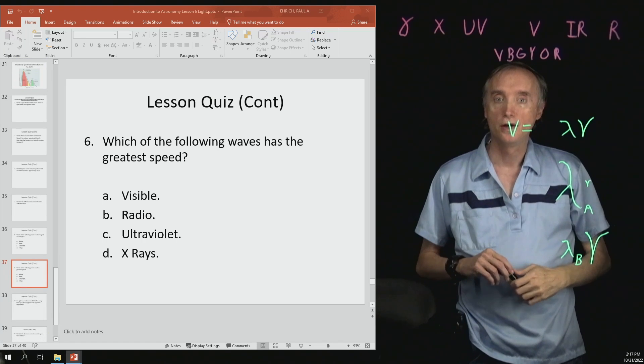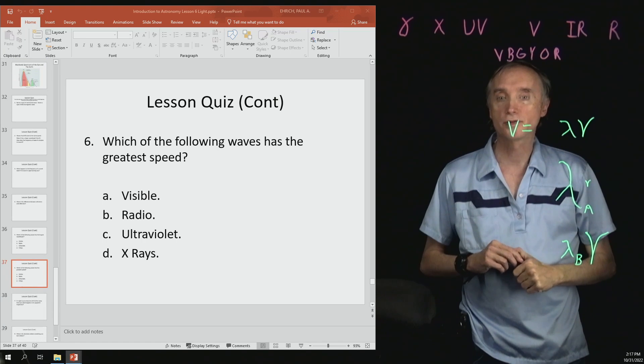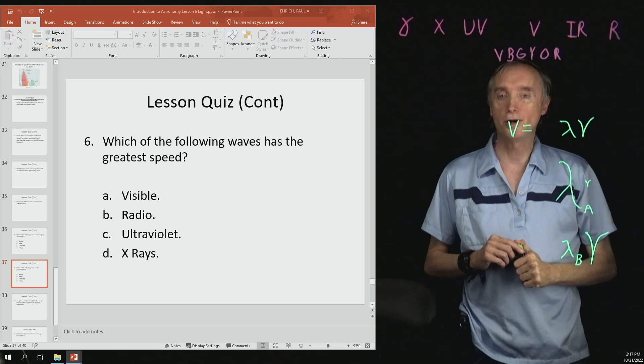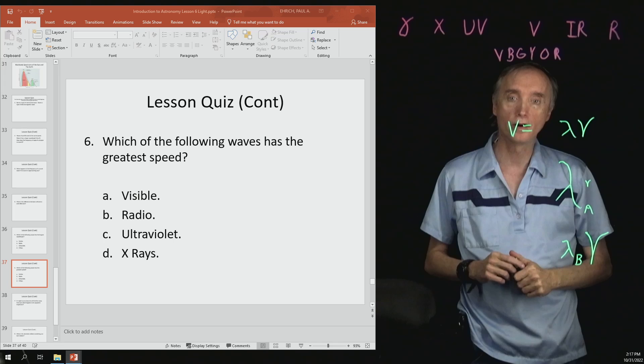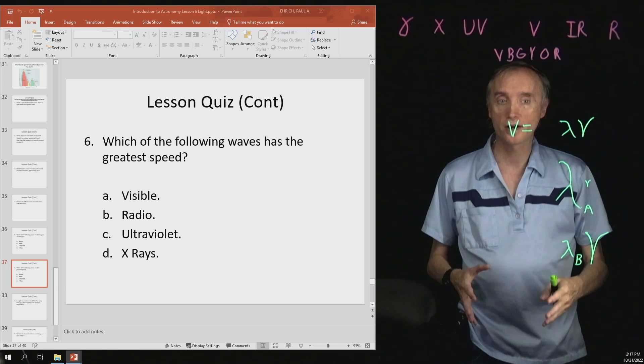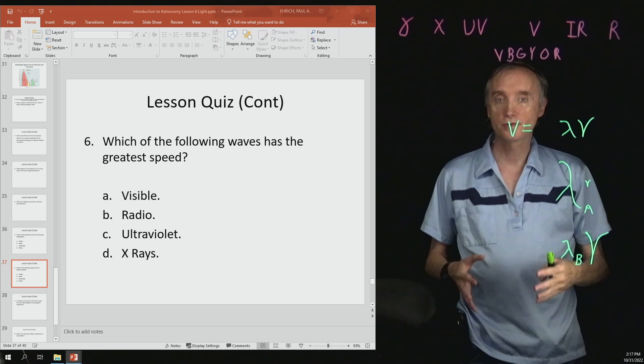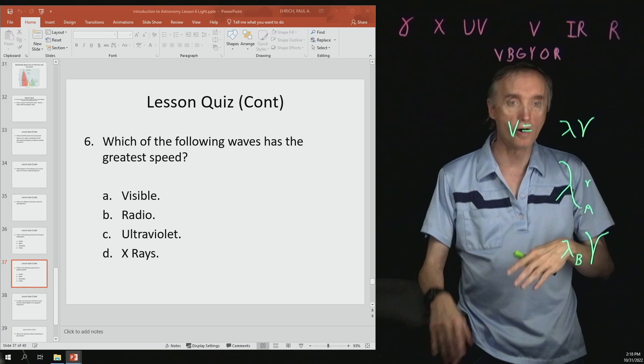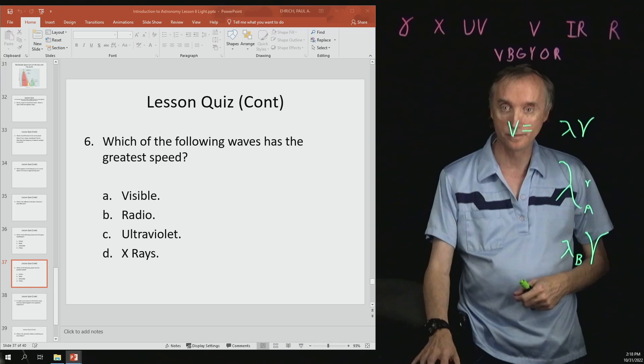Number six, which of the following waves has the greatest speed? This is a trick question because all of those are light waves, and all light waves travel at what speed? The speed of light. So it's none of those. So all of them are traveling at the same speed, the speed of light.